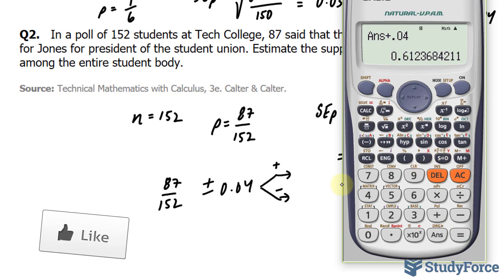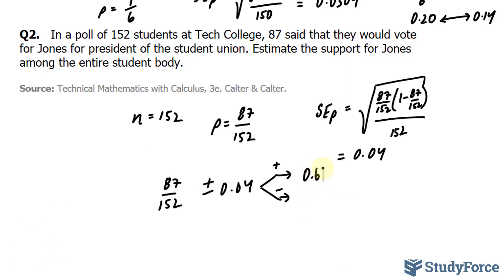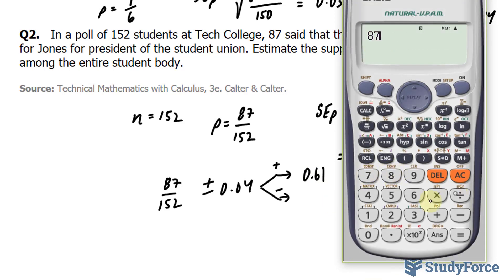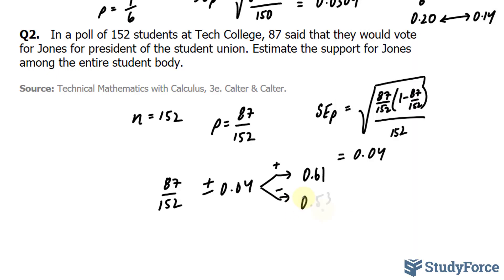This gives me 0.61. Doing the same thing, but with subtraction, we get 0.53. Thus, we expect that there is a 68% chance that the support for Jones is between 0.53 and 0.61, which is pretty good. Or in other words, this person will capture 53% and 61% of the vote of the entire student body.